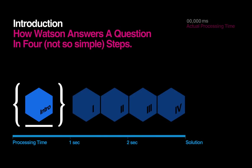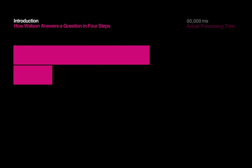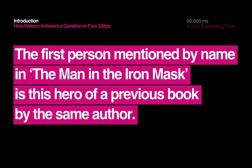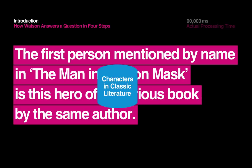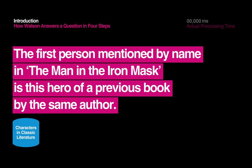How Watson Answers a Question in Four Not-So-Simple Steps. The first person mentioned by name in The Man in the Iron Mask is this hero of a previous book by the same author. This is a typical Jeopardy! clue, presented in the tricky Jeopardy! format that can be pretty difficult for a person to understand.